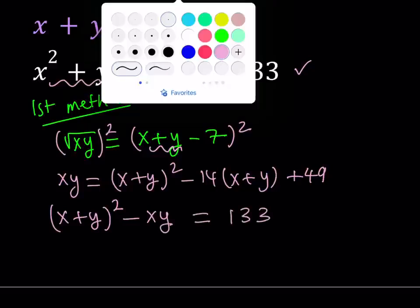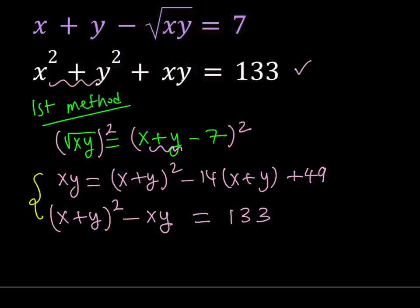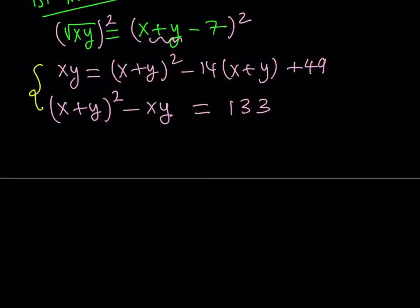Now this is my new system. And notice that this system is in two variables. One of them is x plus y, the other one is xy. So I'm going to call the following: x plus y, let it be s for sum, and xy, I'm going to call that p for product. And then I get the following.